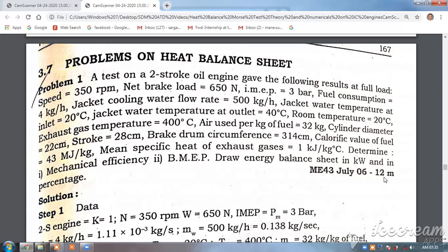This is a numerical on IC engine. A test on a two-stroke oil engine gave the following results at full load: speed 350 rpm, net brake load 650 Newton, indicated mean effective pressure 3 bar, fuel consumption 4 kg per hour, jacket cooling water flow rate 500 kg per hour, jacket water temperature at inlet 20°C, at outlet 40°C.